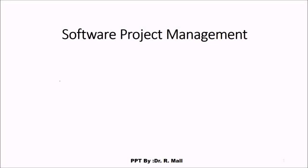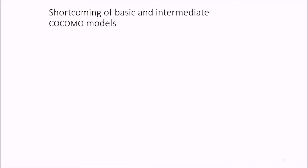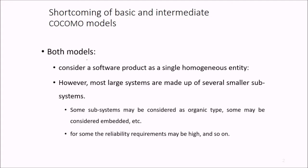In continuation with our discussion of software project management, there are certain shortcomings of basic and intermediate COCOMO models. Both models consider software product as a single homogeneous entity. However, most large systems are made up of several smaller subsystems. These subsystems may be organic type, semi-detached, or embedded. Some reliability requirements may be high and so on. So a varied kind of formation is there.